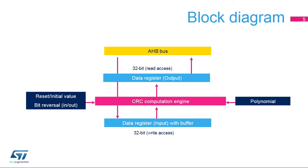It contains a single 32-bit register, which is used for both writing and reading by either the CPU or DMA controller. The initial value, input-output bit reversal, and polynomial coefficients are configured by the software during the initialization phase before starting a new CRC calculation. The CRC computation engine will hold the result of any previous CRC calculation, which then becomes the initial value for the next calculation, thus allowing a new CRC computation of a data block.